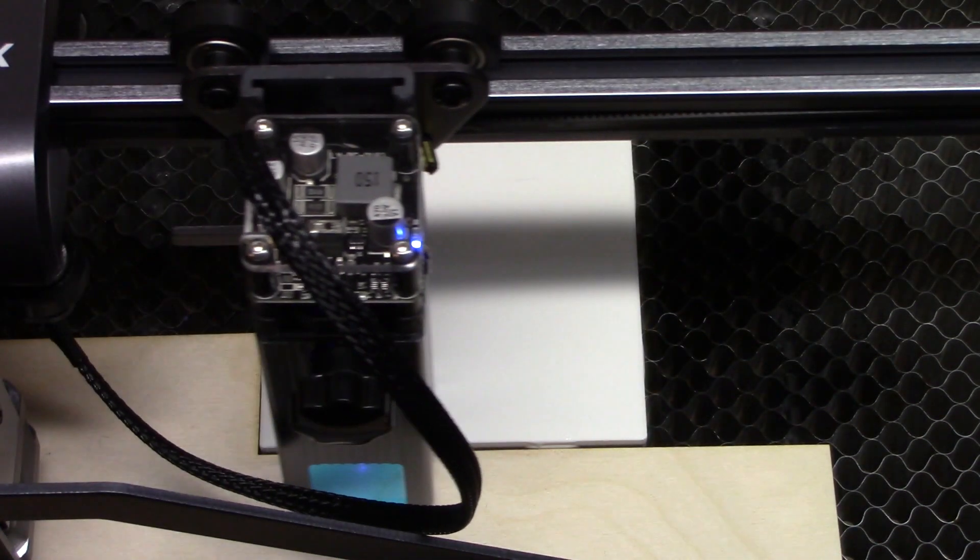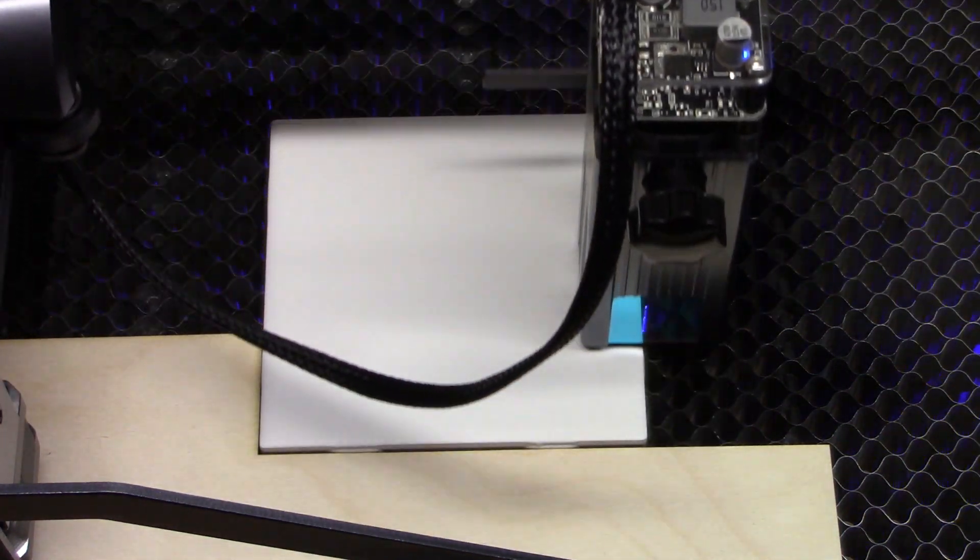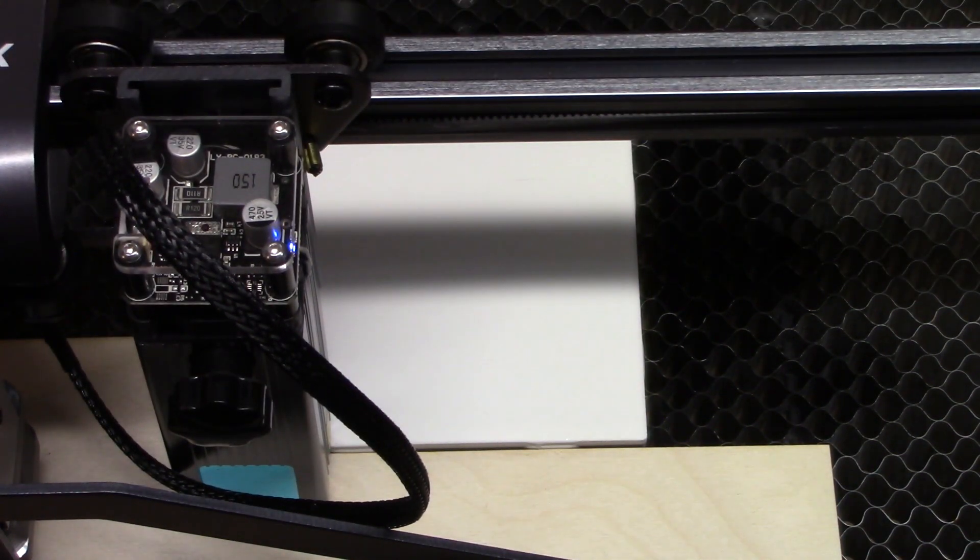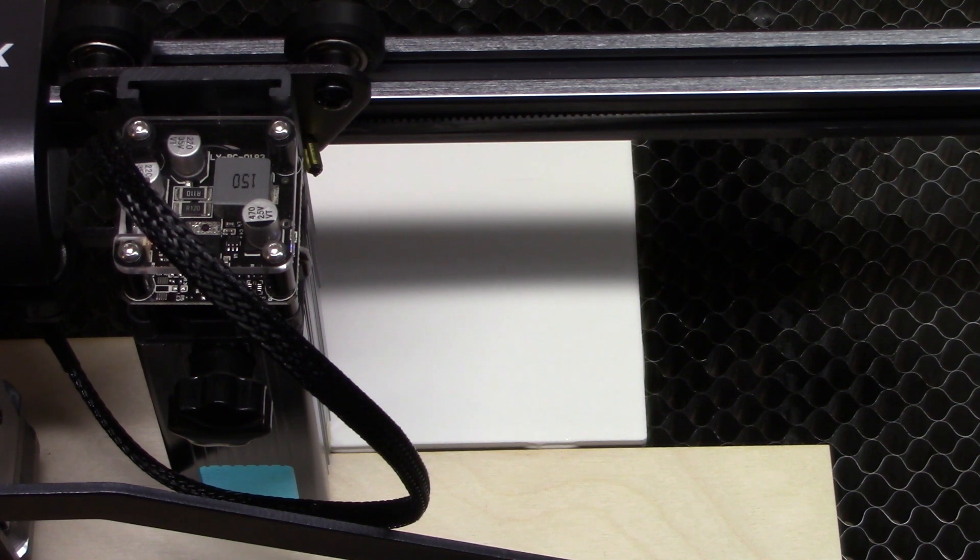We'll do a frame just to make sure everything's lined up correctly. We should also still be focused on the top surface of the tile. That looks good. Let's start the burn. First, turn on our ventilation because this will smell otherwise. Now we'll start the burn.